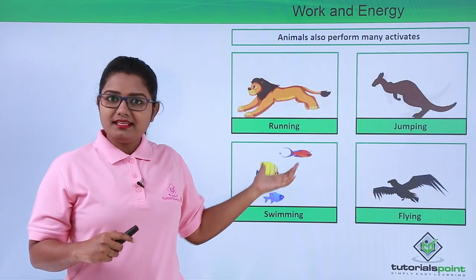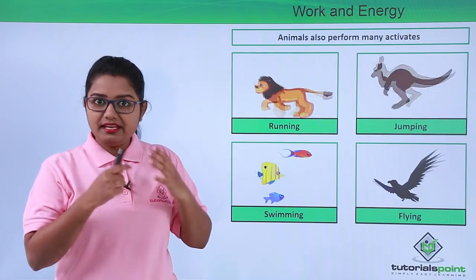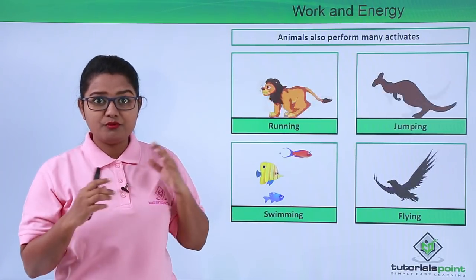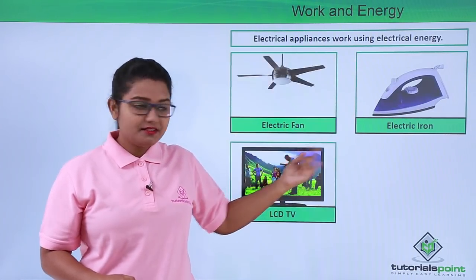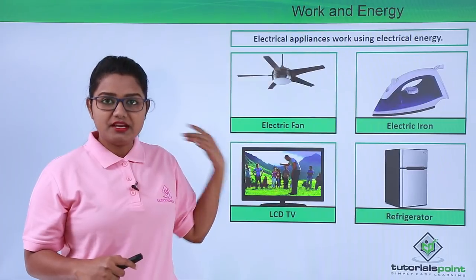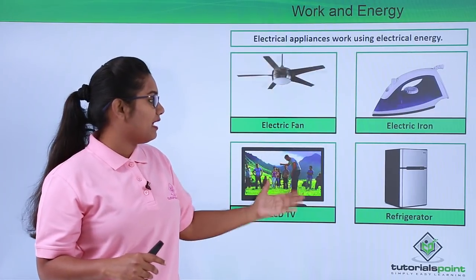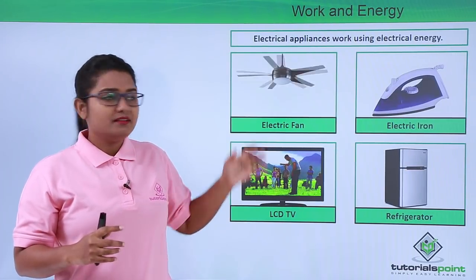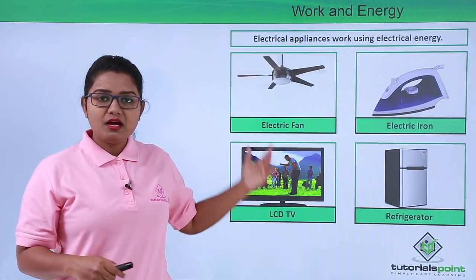These are living things — humans and animals — and we get energy from the food we eat. But what about machines? Machines also perform a lot of work. For example, machines like the electric fan, electric iron, LCD TV, and refrigerator are electrical appliances found in almost every household. These appliances perform the work that we are supposed to perform, making our work easier.